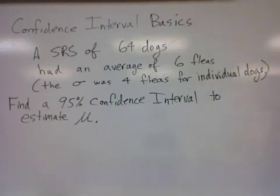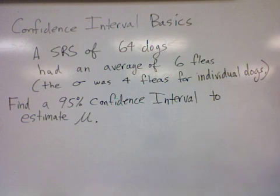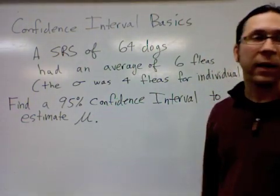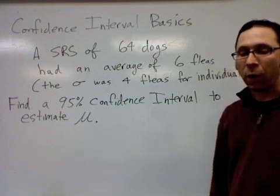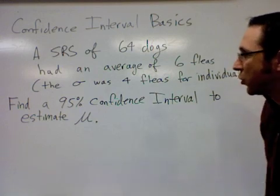The fictitious piece is that we know the standard deviation for the entire population was four fleas for individual dogs. They're asking us to find a 95% confidence interval to estimate mu, which is the mean number of fleas for all dogs in the population that we're trying to shoot for.